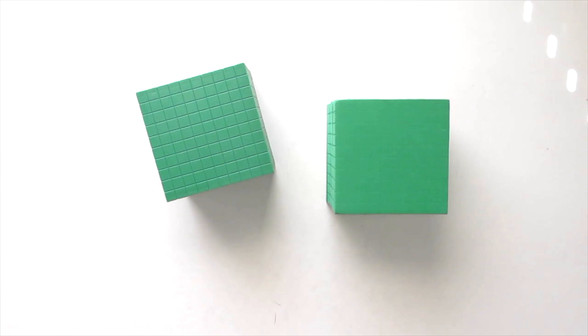But these blocks don't represent the values just because of how they look. They show the relationship between place values. For example, 10 unit cubes make one rod, 10 rods make one flat, 10 flats make one large cube.